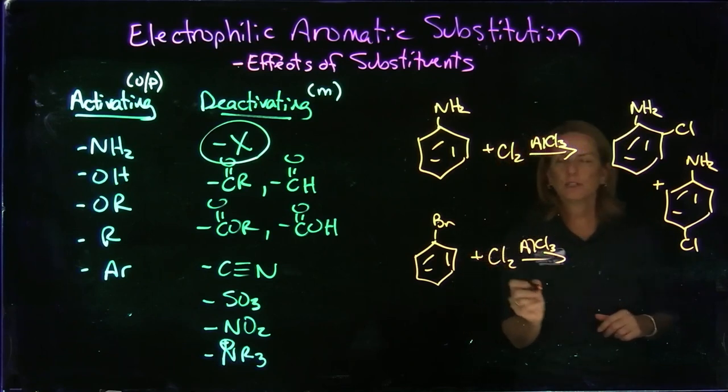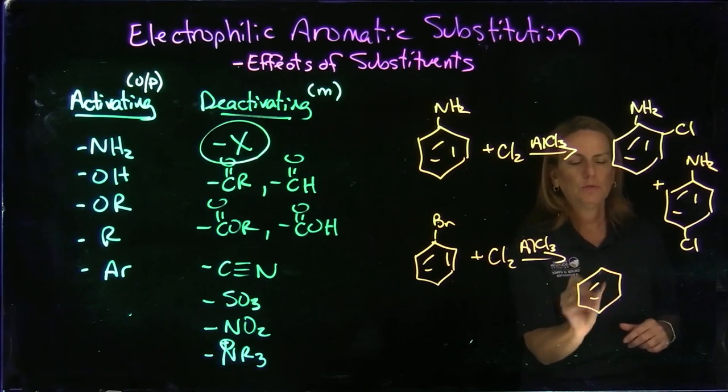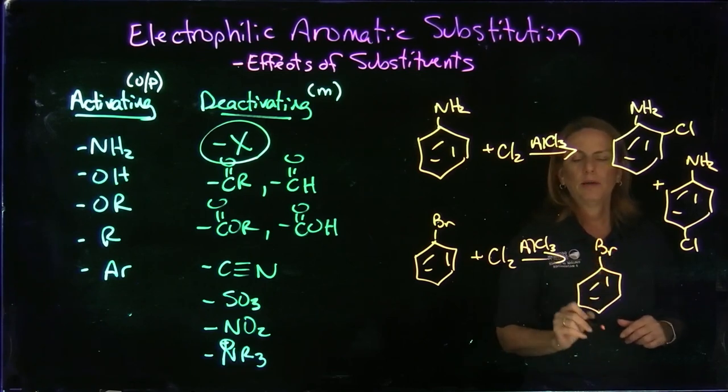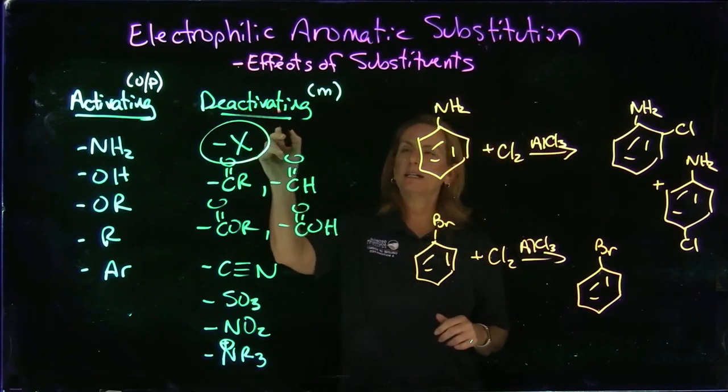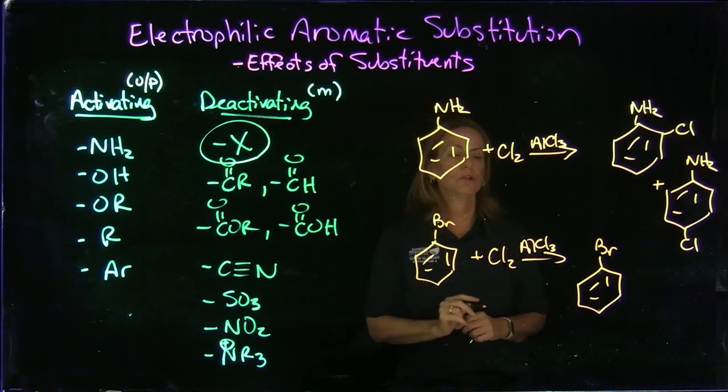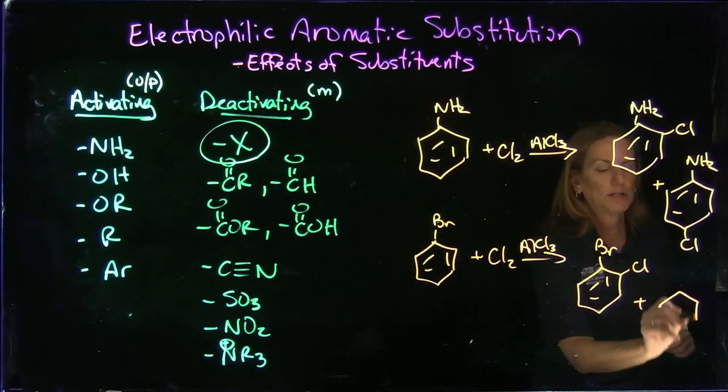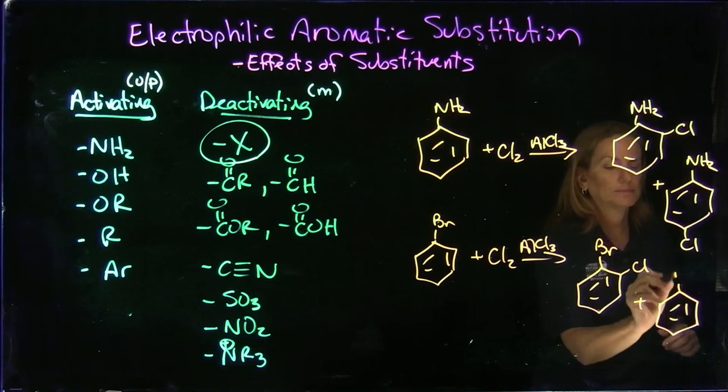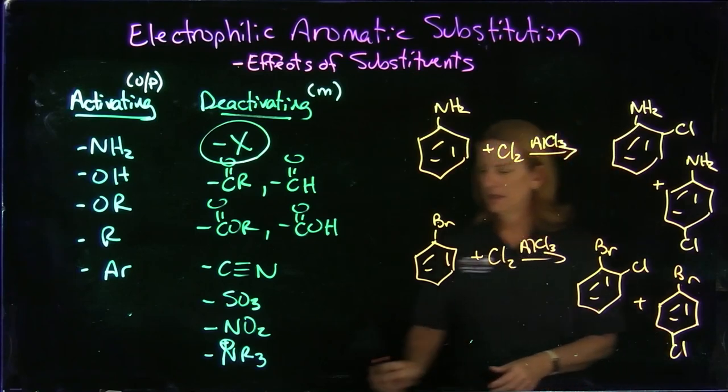Now let's look at this next one here, a bromo compound. The bromo will remain. But now, once again, we're adding a chloro as the new group. Now, bromo is in the deactivating, so they will all go meta except the halogens, which are an exception. So once again, in this case, we will get two products, ortho and para.